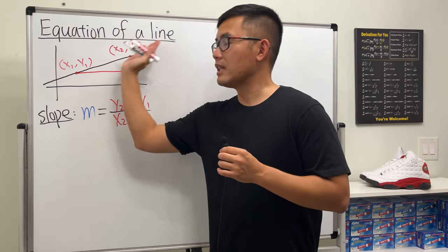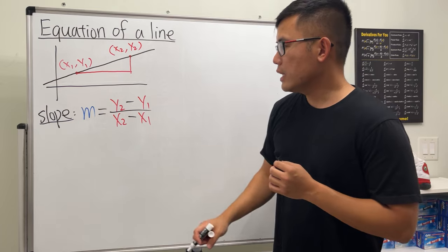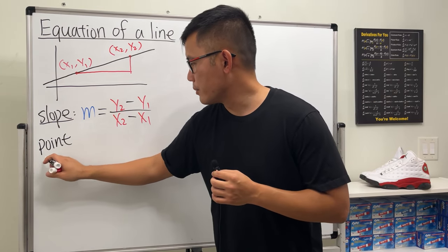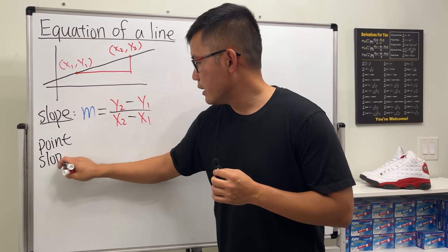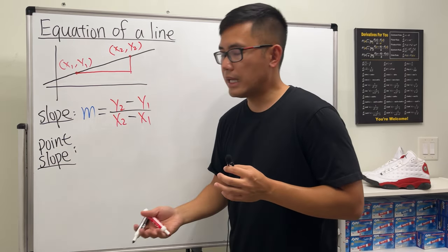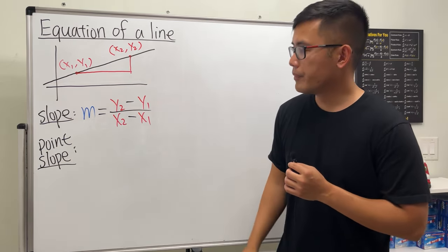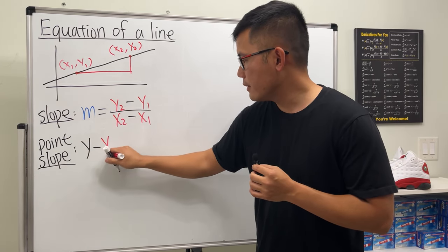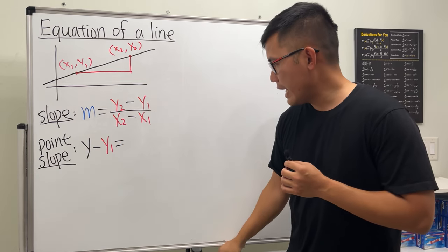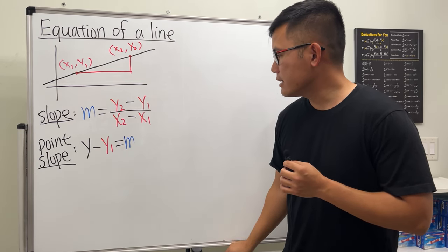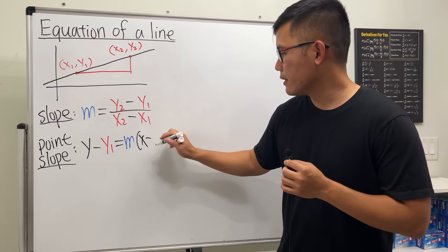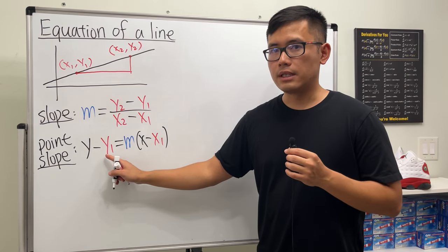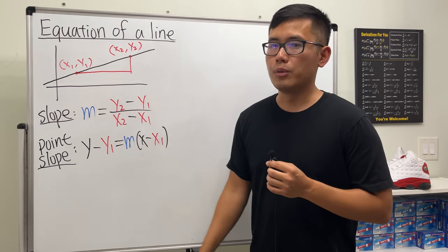When you divide that vertical distance by the horizontal distance, you find the slope, which tells you how steep the line is. The next thing we need is the point-slope form of the line: y − y1 = m(x − x1), where x1, y1 is the point and m is the slope.